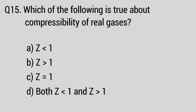Question number 15: Which of the following is true about compressibility of real gases? The right answer is option D, z greater than 1 and z smaller than 1.